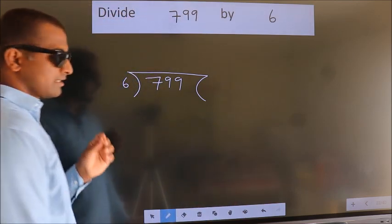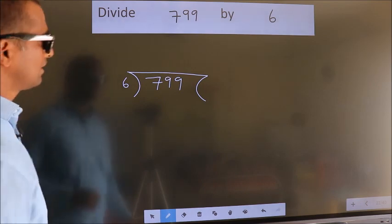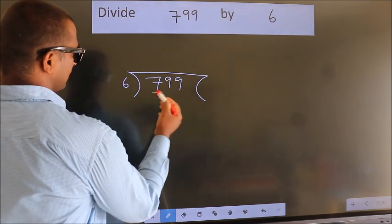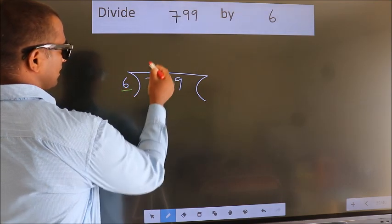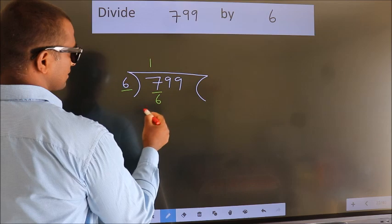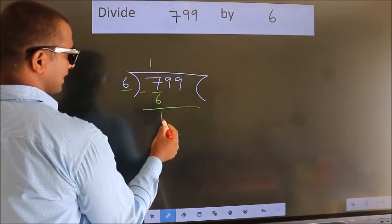This is your step 1. Next, here we have 7, here 6. A number close to 7 in the 6 table is 6 ones, which is 6. Now we should subtract. We get 1.